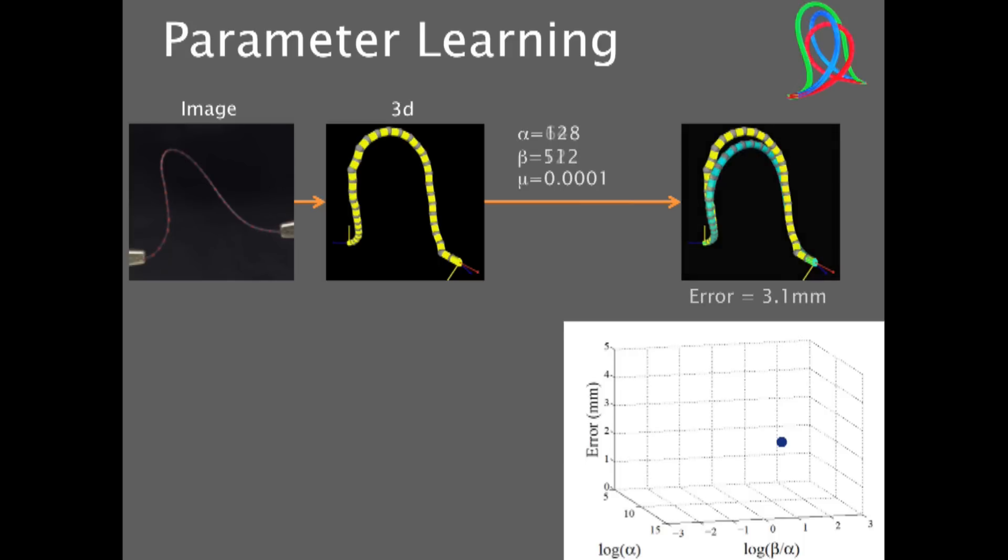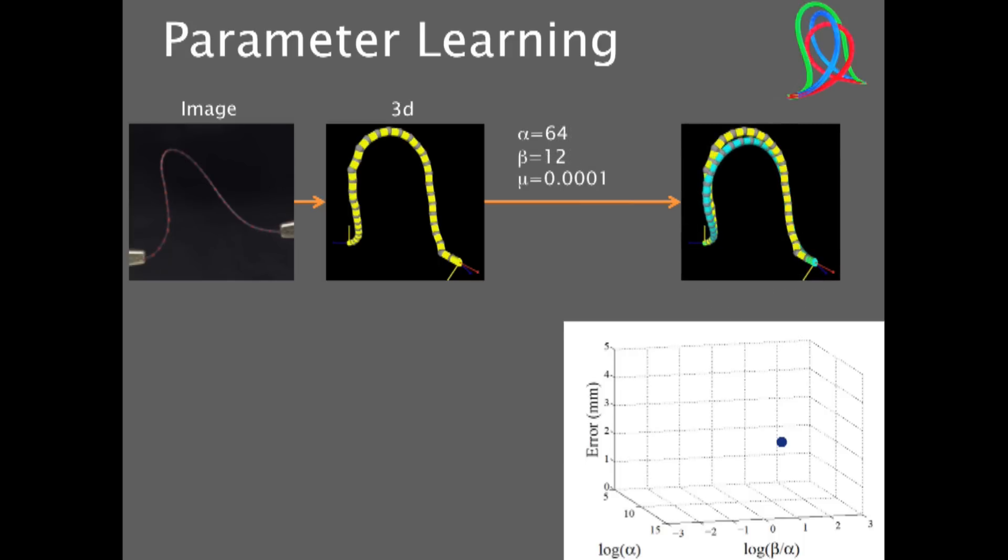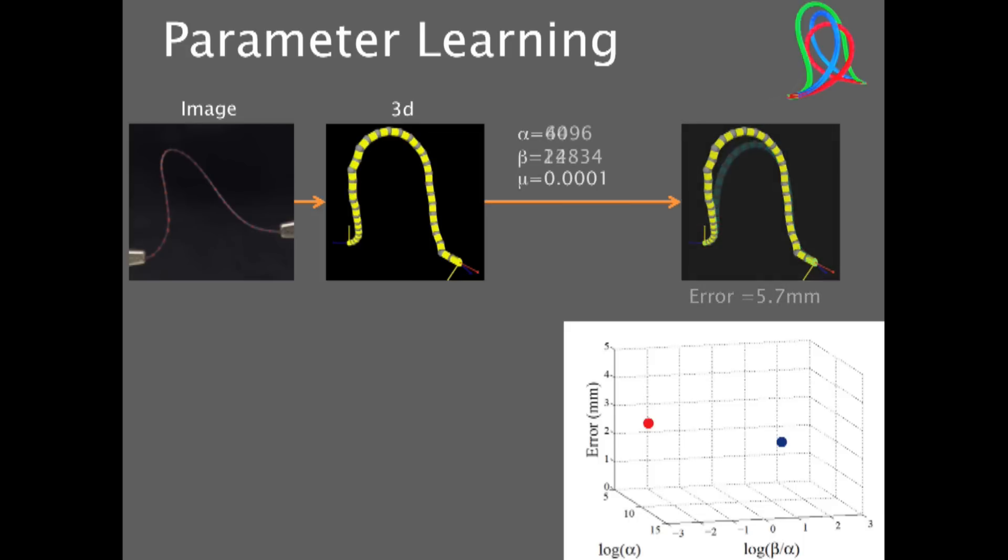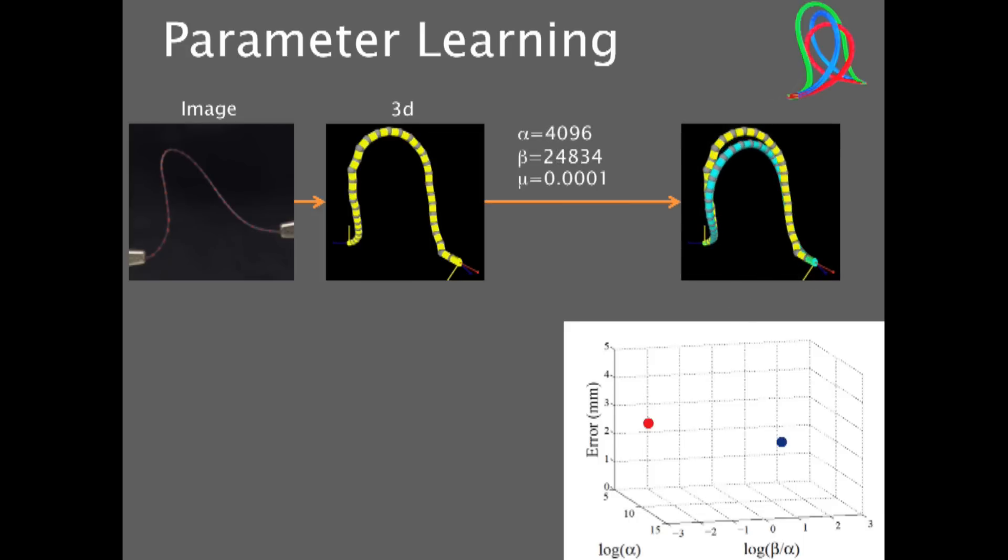And we can repeat this for different parameters. Again, change the parameters running simulation, seeing how far we end up. And we can do this over and over until we end up with a mapping between parameters and errors. And what we define as the best parameters for that specific material is the lowest of those errors.